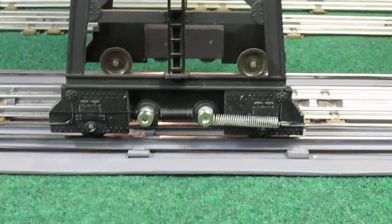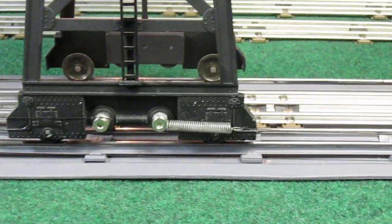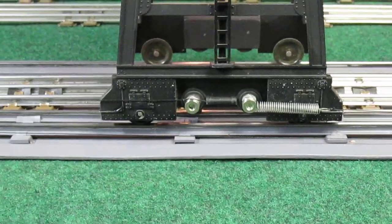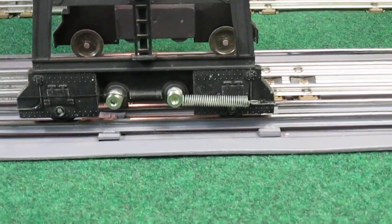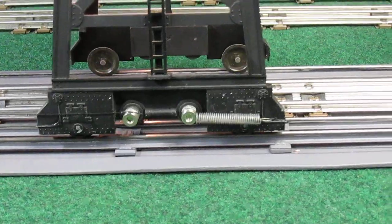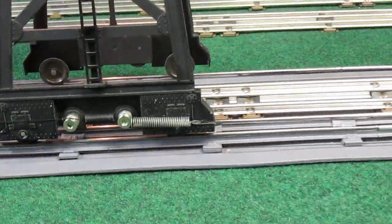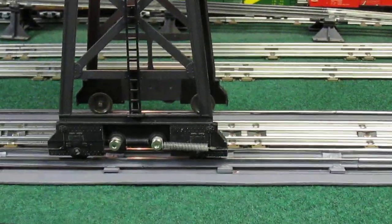To change the tension on the spring, all I have to do is loosen the thumb screw and move the string to whatever tension I need for it. Let's see how it works.